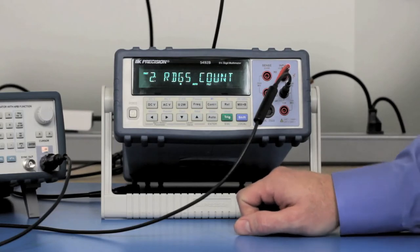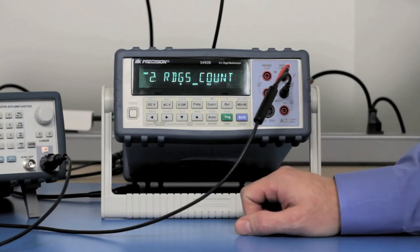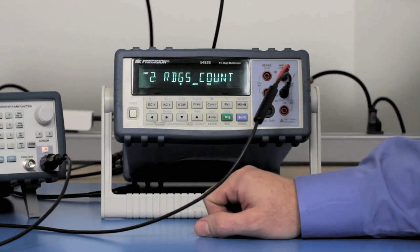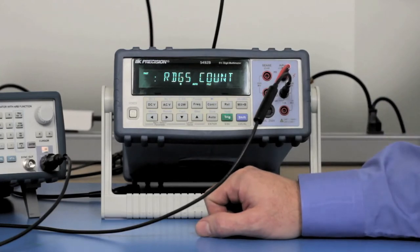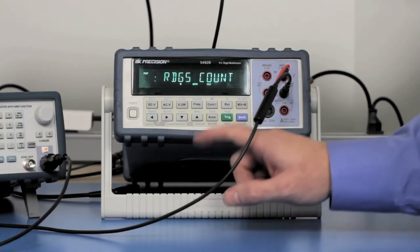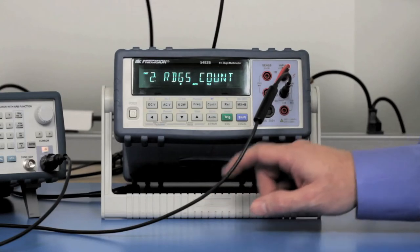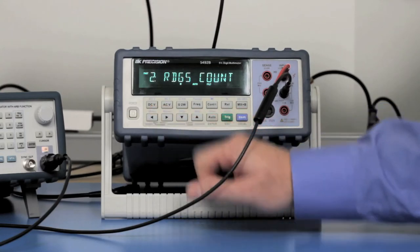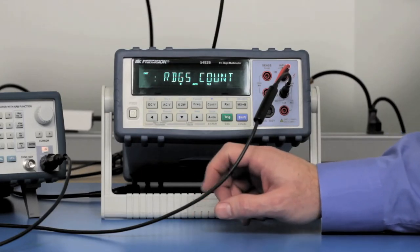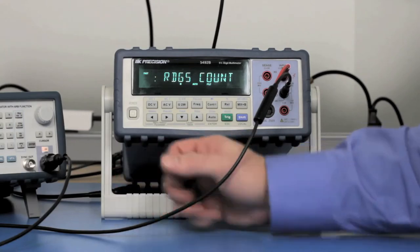Once the 5492B is in the buffer storage mode, you're going to see this little asterisk right here underneath the G telling you that it's in that mode. Now the unit is ready to go, and as soon as I press shift left arrow, the 5492B will start to record. But before we do that, I'm going to show you how I'm going to generate the signal and what we should expect to see.